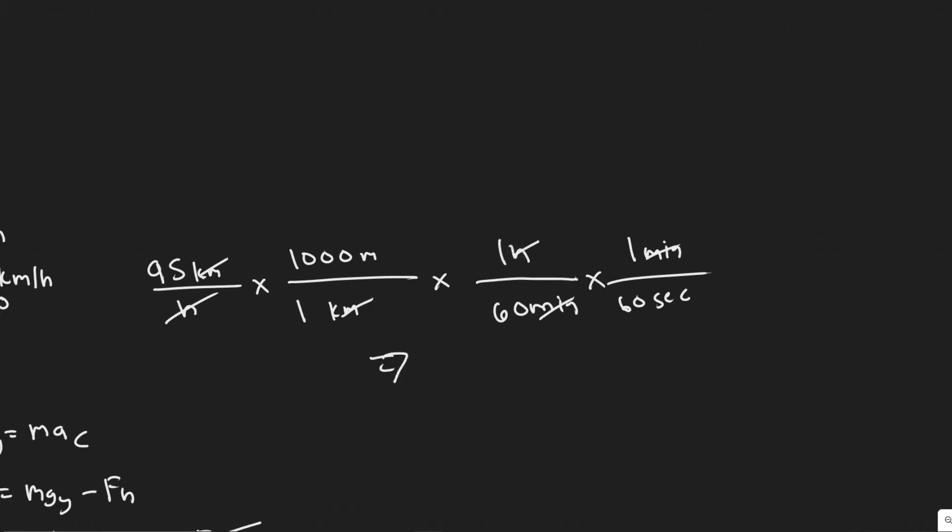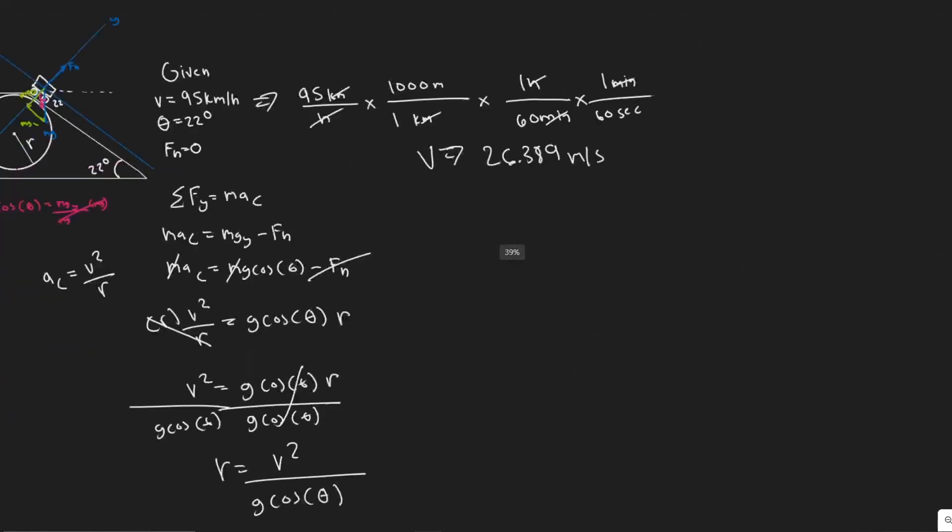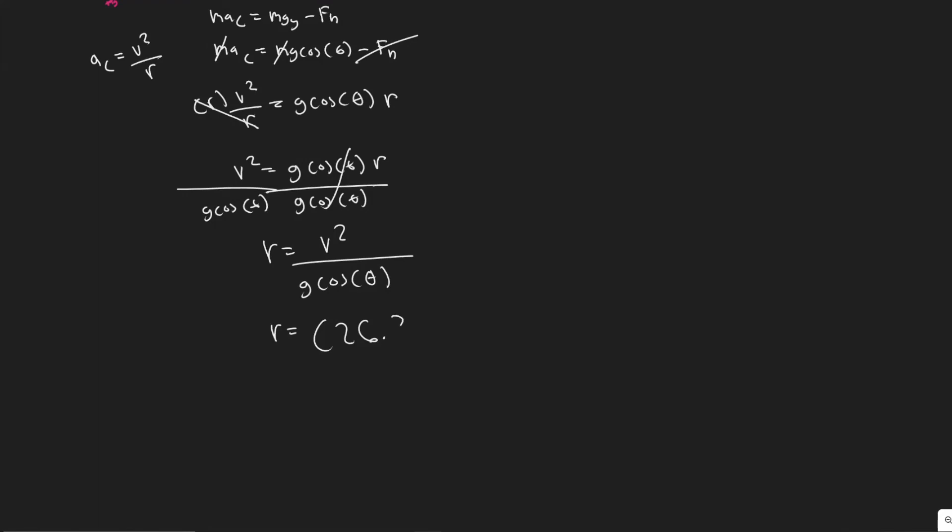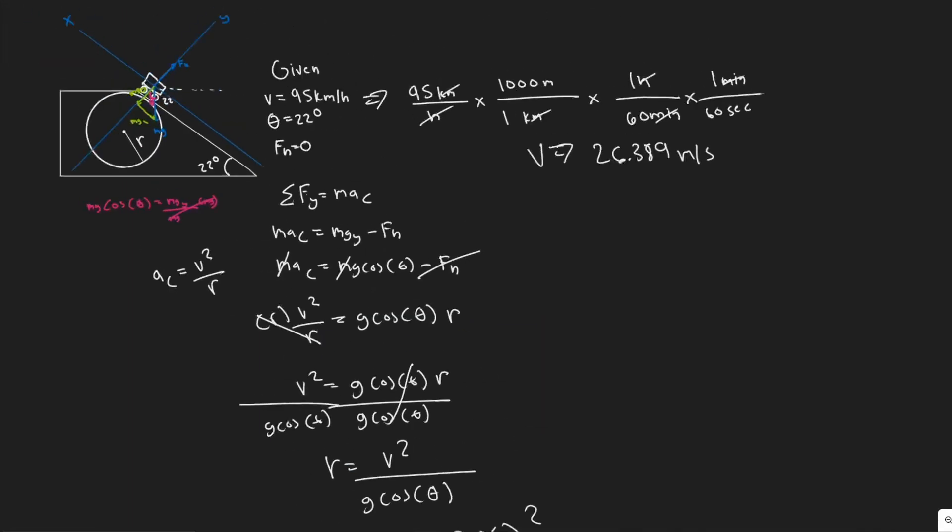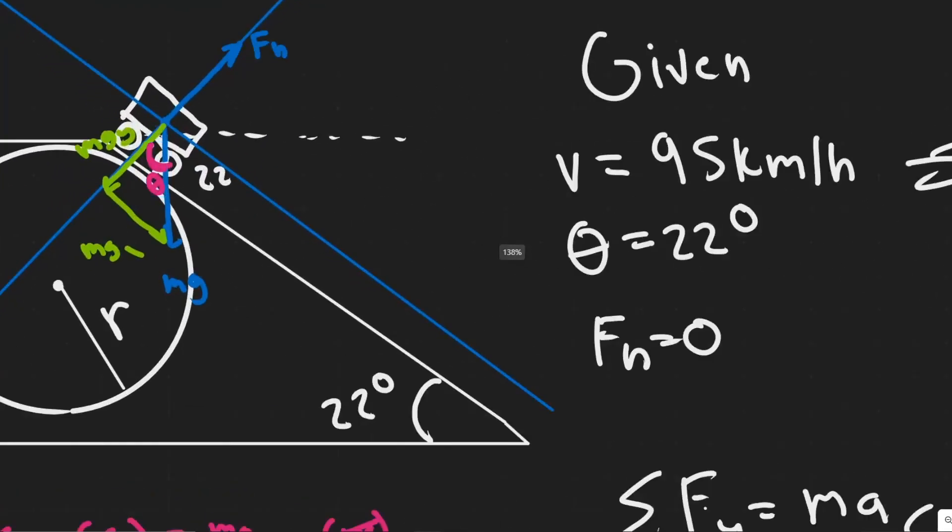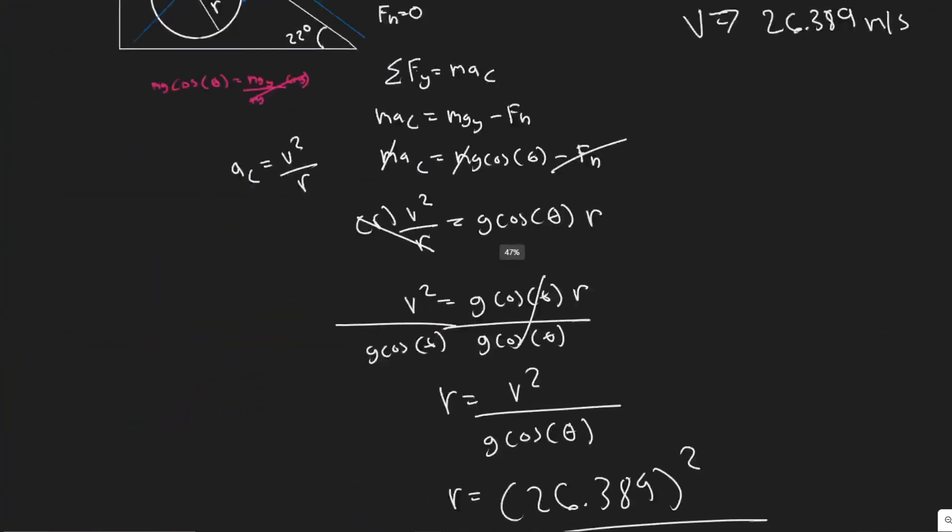So we just got to perform the calculations now. So you're going to have 95 times 1000 divided by 60, divided by 60, you get 26.389. And then the units are meters per second. So this is your velocity. And now we can actually just plug it in. So 26.389, you're squaring that value divided by the acceleration due to gravity, 9.8. Then you multiply by the cosine of your angle theta, which is right here. But as I said before, this angle is equal to the angle of incline, which is 22 degrees. So going back, plugging this in now,